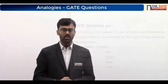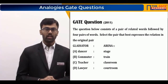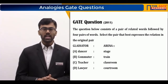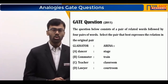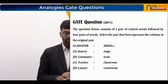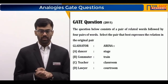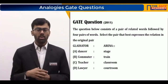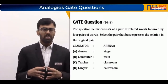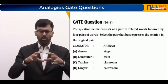The next question from previous years' GATE exams again provides an original pair of words with four options. The original pair is 'gladiator : arena.' In ancient times, particularly in Rome, a gladiator was a fighter who performed in a large stadium-like enclosure with a big ground in the center and seating for many people all around.